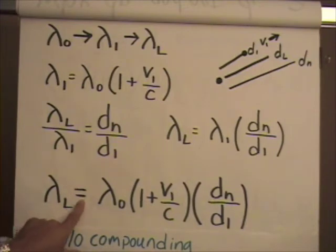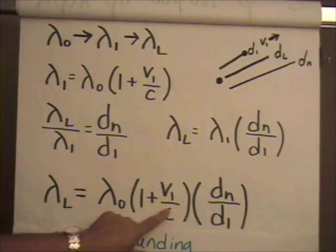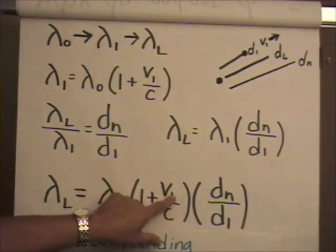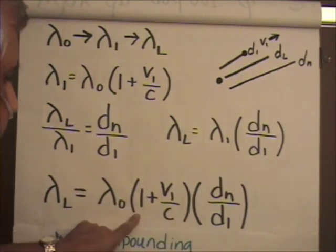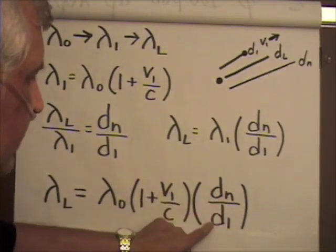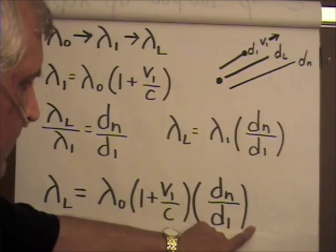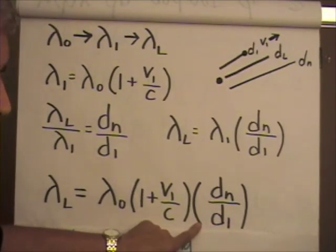Final wavelength equals initial wavelength times one plus v1 over c, the Doppler redshift, times dn over d1, the cosmological redshift.